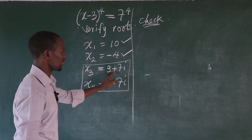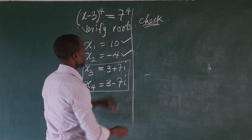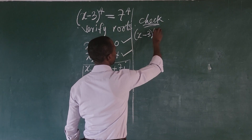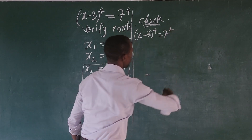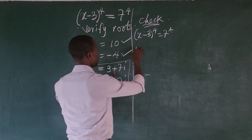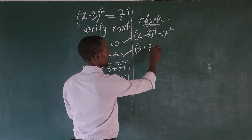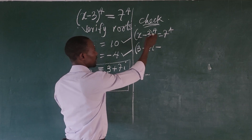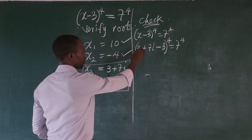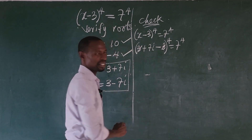We take the first imaginary root, x3 = 3 + 7i. Our original equation is (x - 3)^4 = 7^4. Substituting x = 3 + 7i, we get (3 + 7i - 3)^4 = 7^4. The 3 and -3 cancel each other, leaving us with (7i)^4 = 7^4.